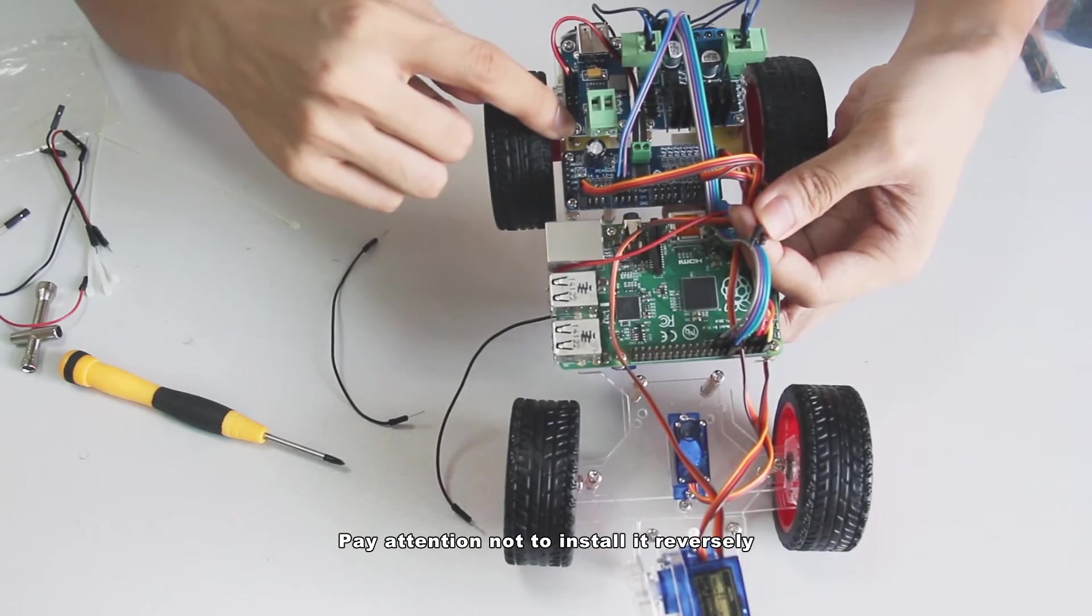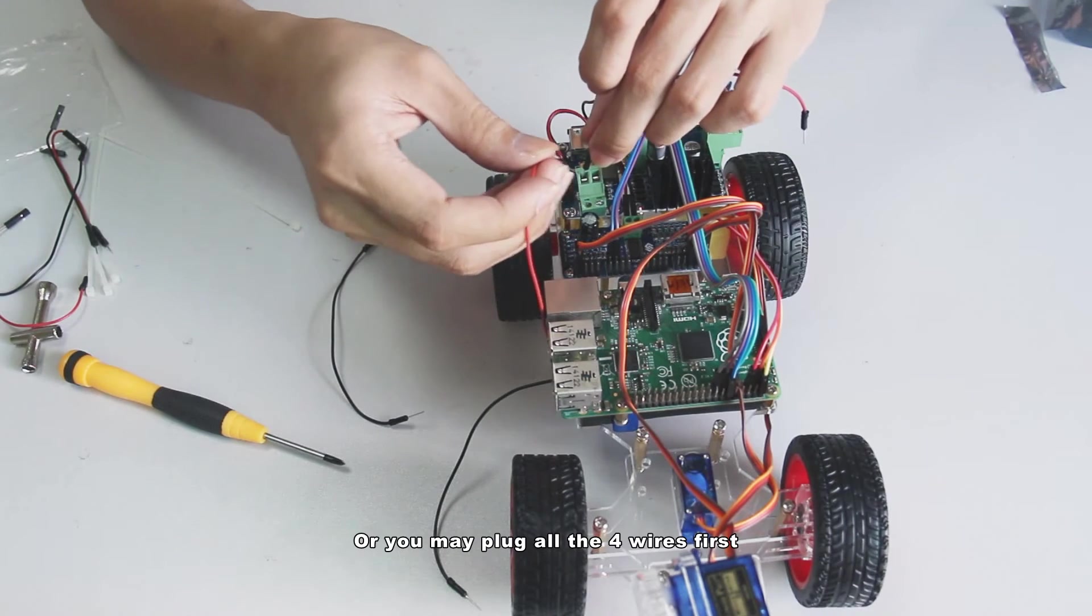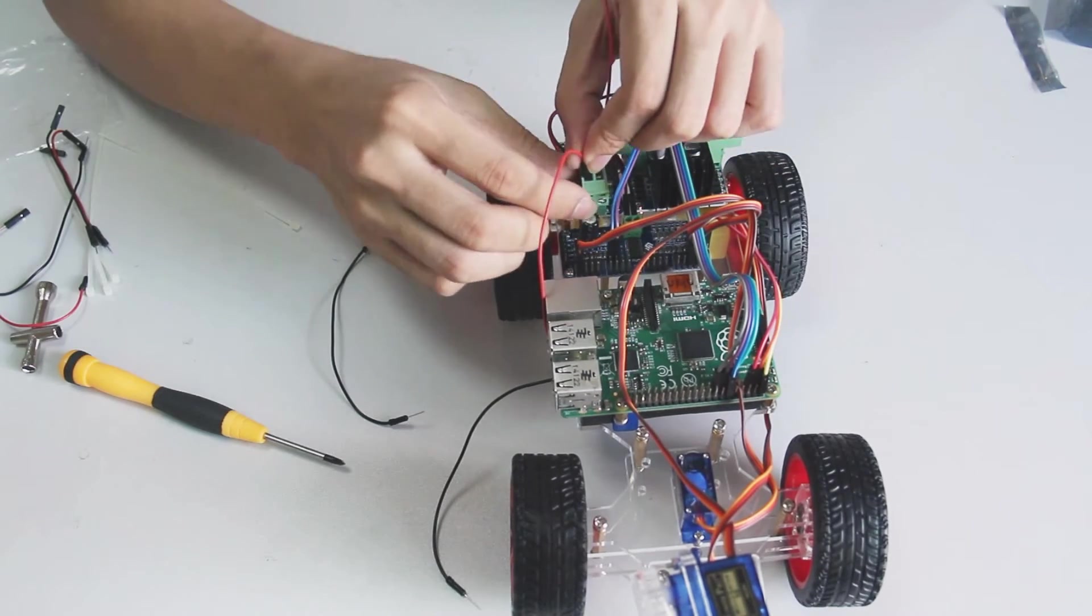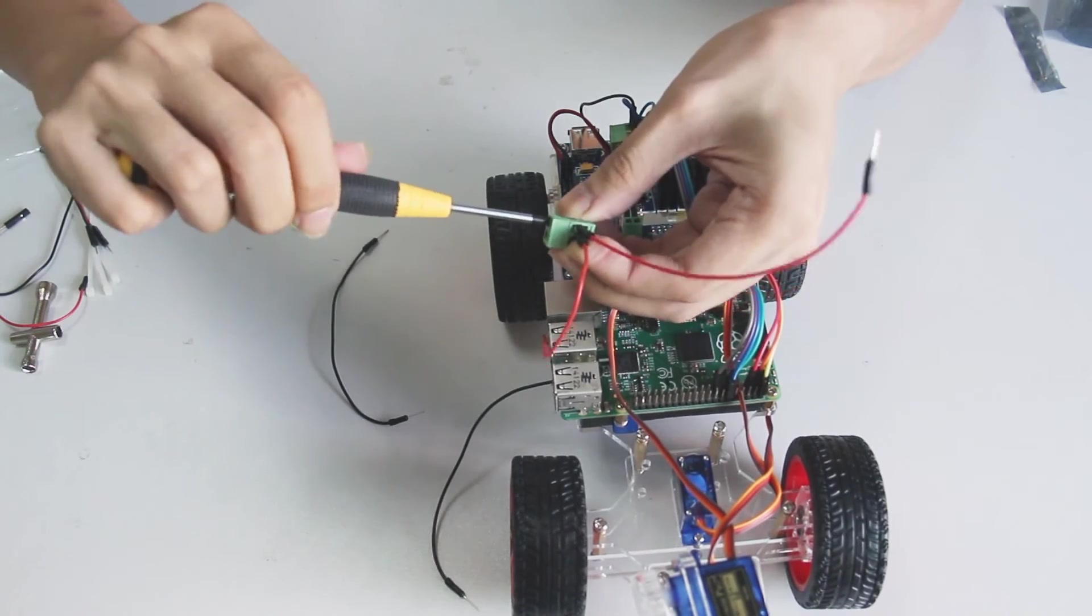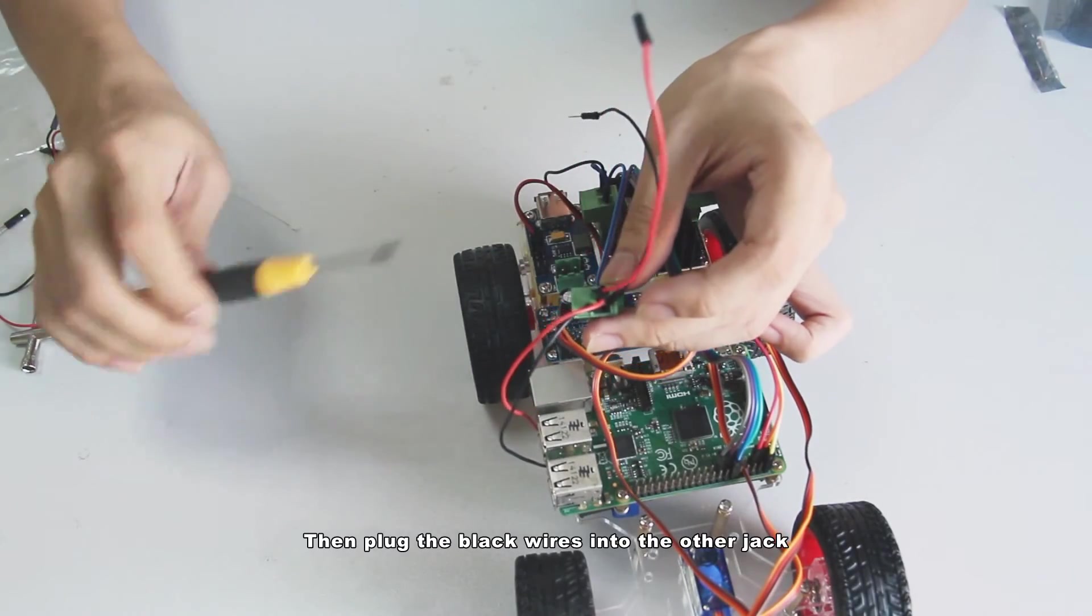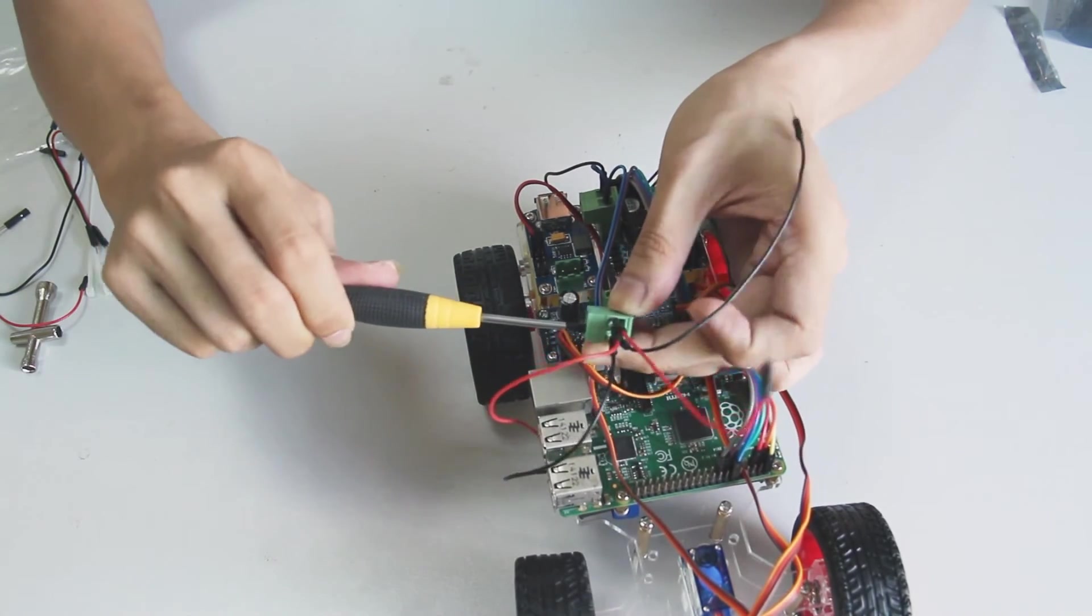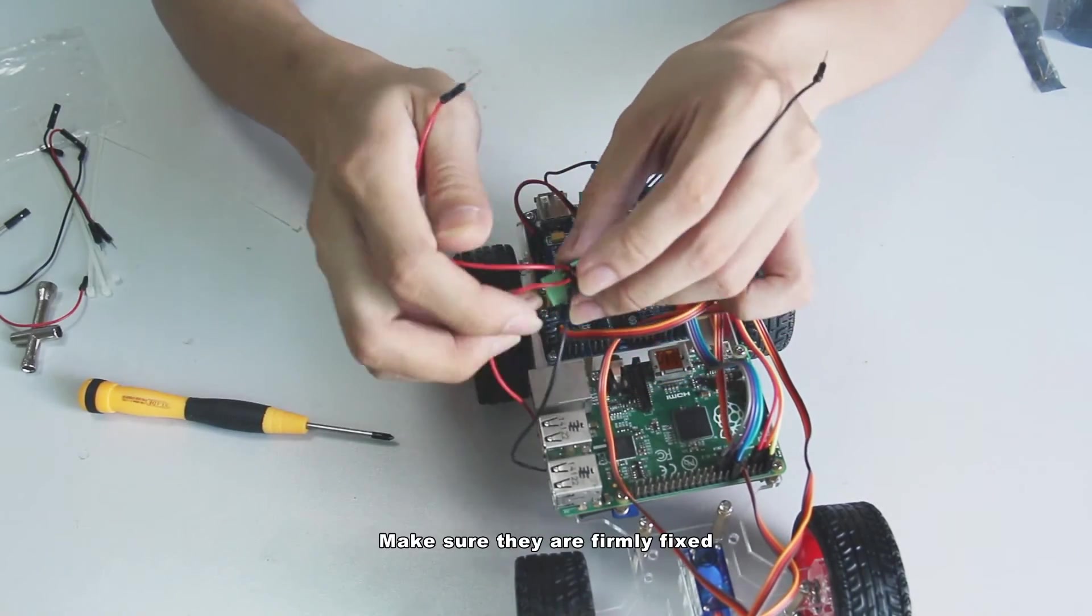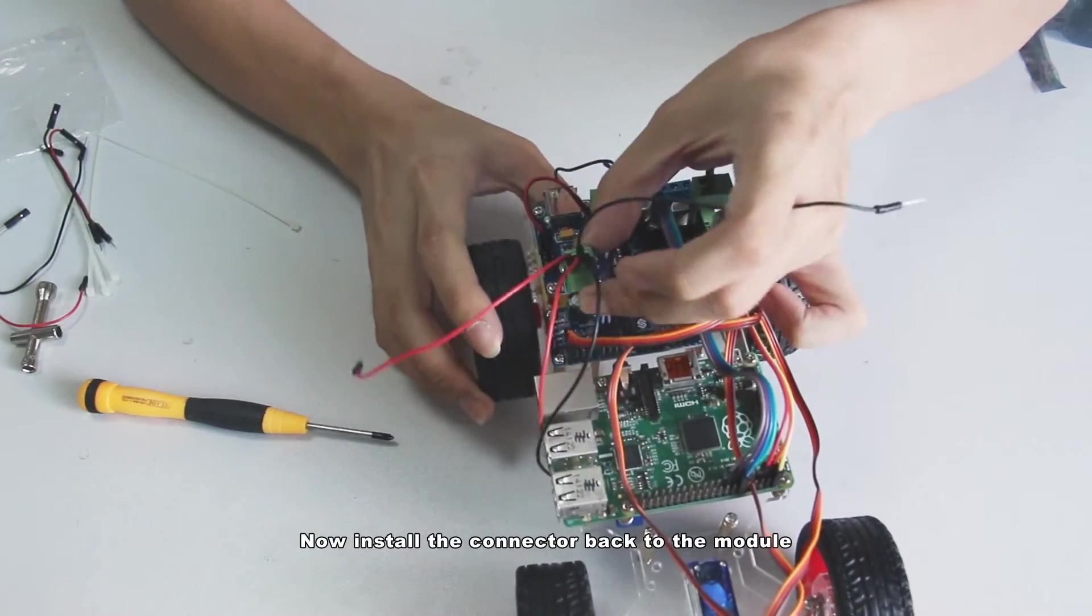Pay attention not to install it reversely. Or you may plug all the 4 wires first. Tighten the screws for this jack. Then plug the black wires into the other jack. Screws tighten again. Make sure they are firmly fixed.